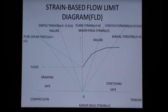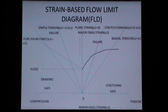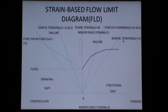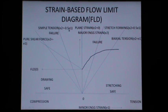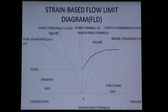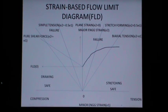Biaxial tension can be represented on the strain-based FLD where e2 equals e1. For stretch forming, e2 equals 0.5 times e1, represented on the stretching side. For plane strain, where e2 equals 0, it is represented along the y-direction of the FLD. For simple tension, where e2 equals minus half of e1, it is represented on the drawing side. Pure shear, where e2 equals minus e1, can also be represented on the drawing side.